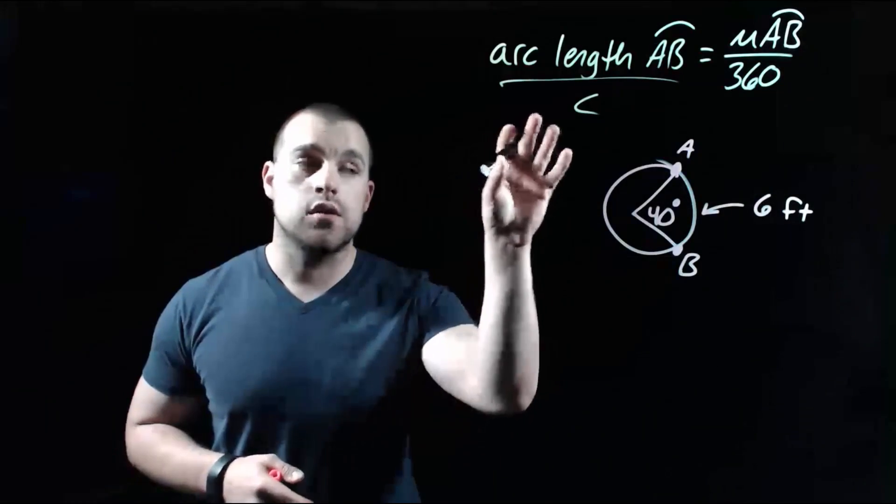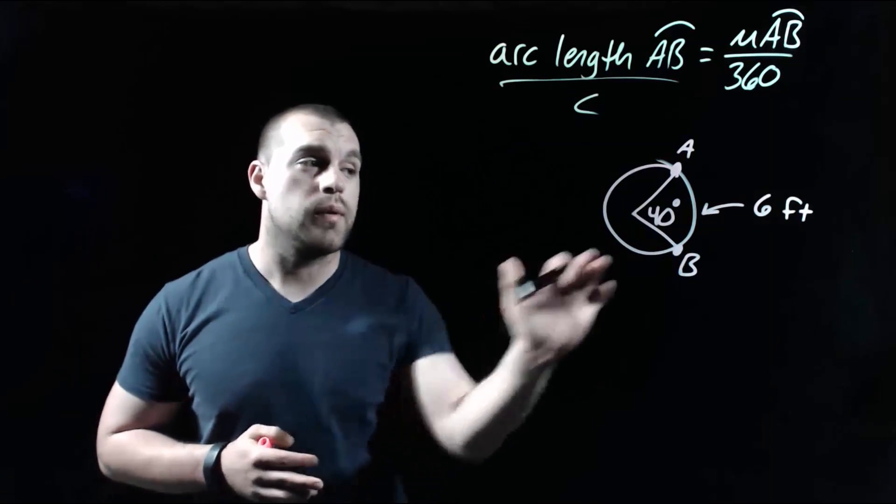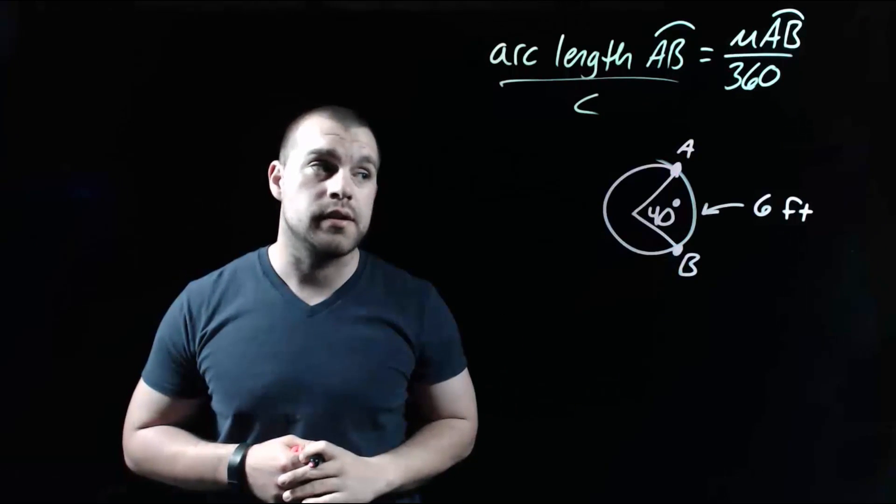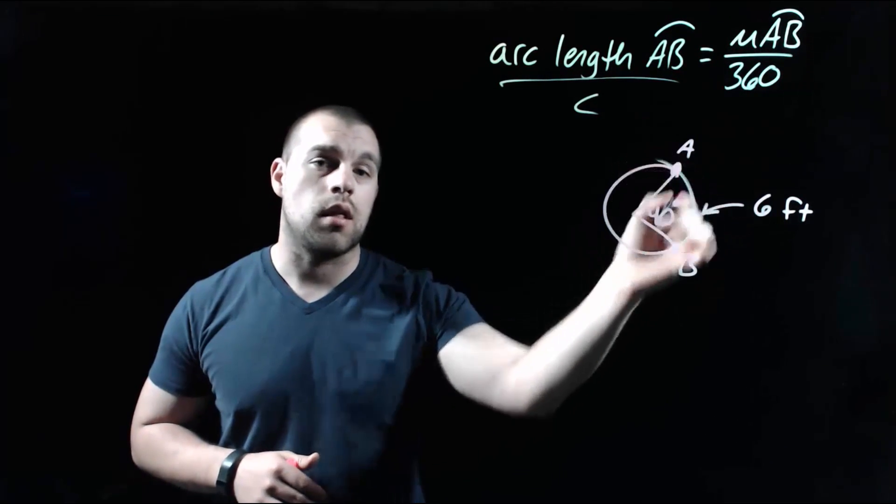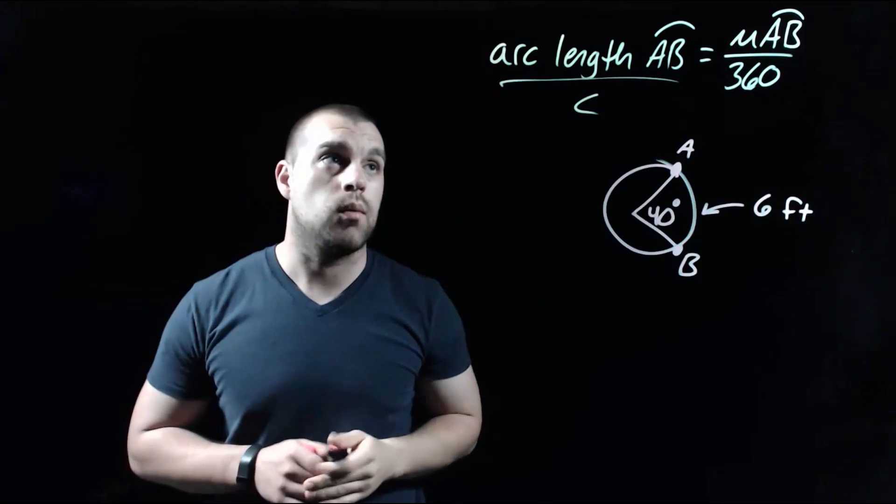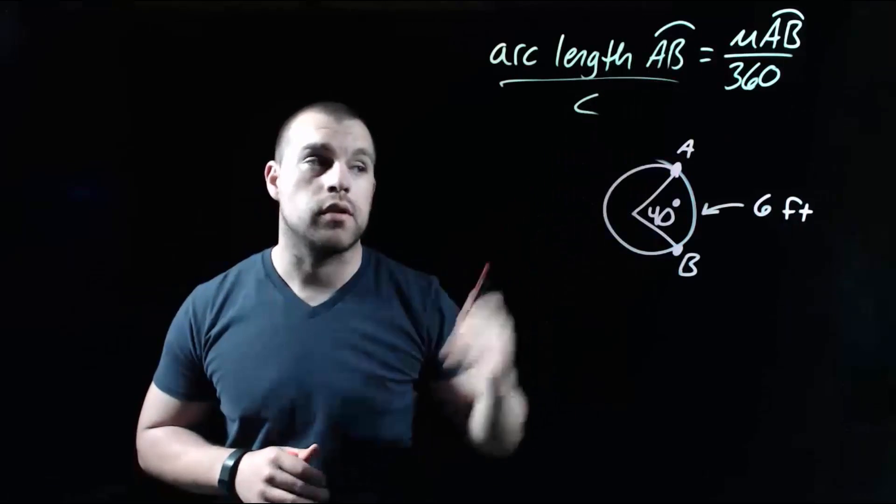Now we're going to use this new formula and this picture. And what we're going to do is we're going to find the circumference of this whole circle. So what we've got is we know that we've got a 40 degree central angle and the six foot length on the outside, that's the arc length of AB. So we're going to look at our new formula where we've got the arc length over the circumference equals the measure of the arc over 360.